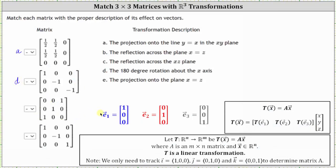Looking at the next matrix, the transformation of E sub one is zero, zero, negative one. The transformation of E sub two is still the vector zero, one, zero. And the transformation of E sub three is one, zero, zero. Notice that under this transformation, the transformation of E sub one is the vector E sub three, and the transformation of E sub three is the vector E sub one.